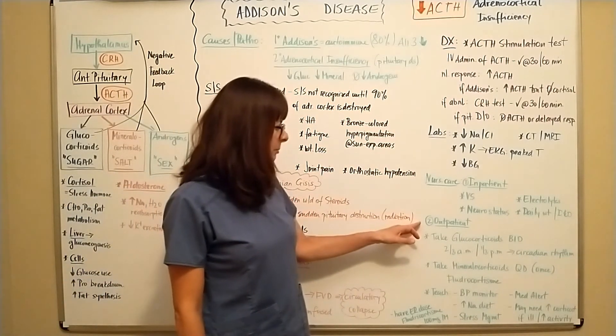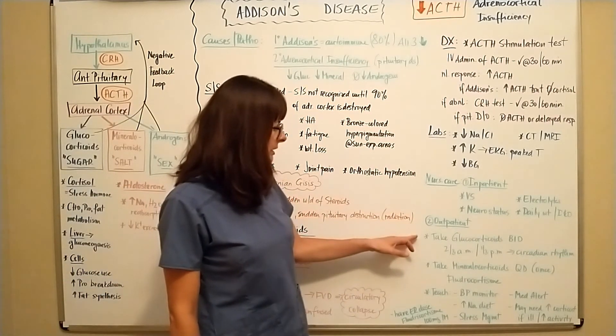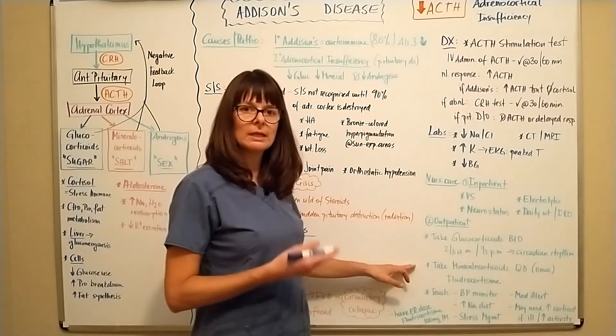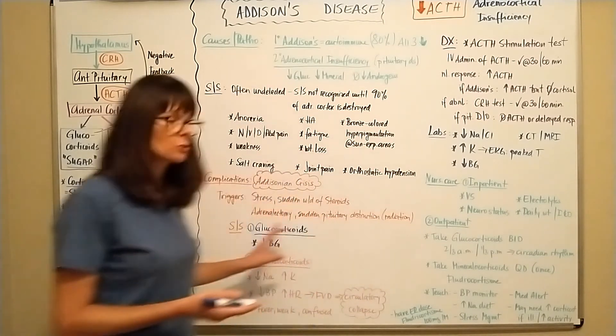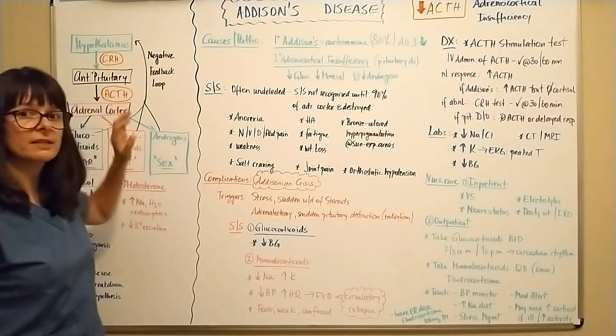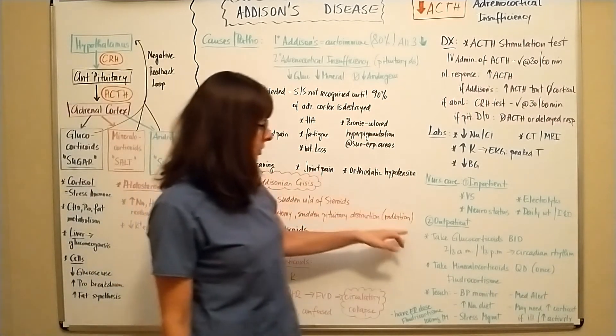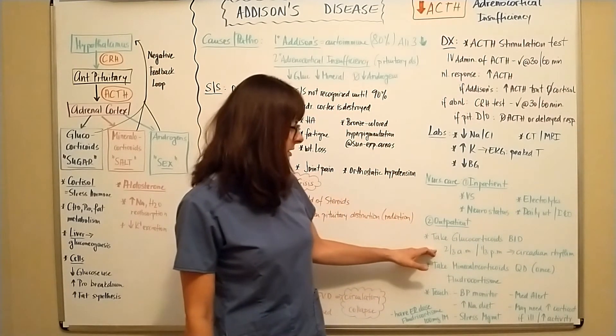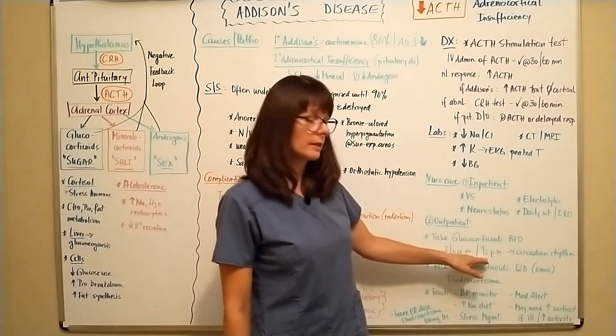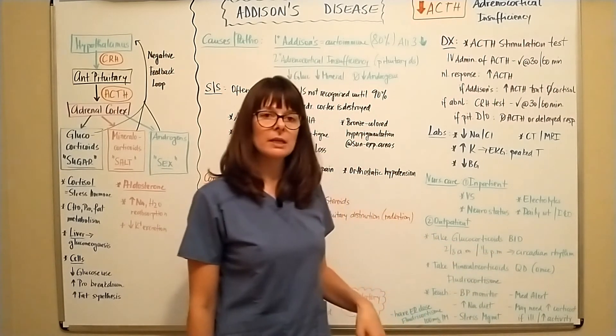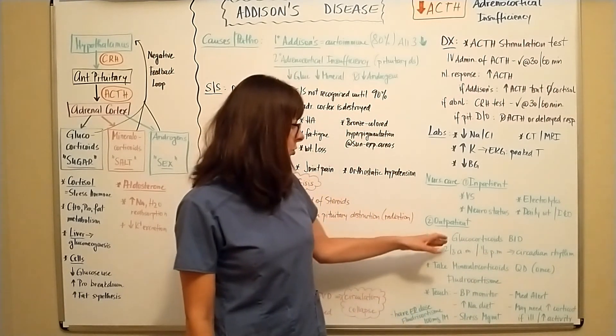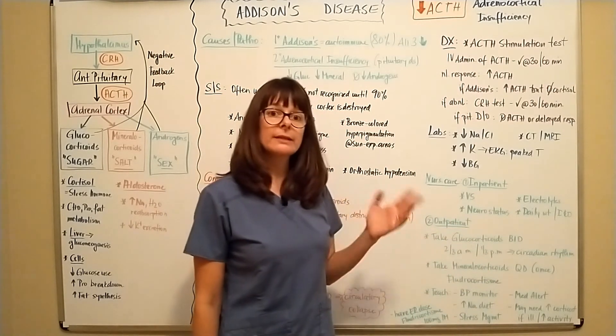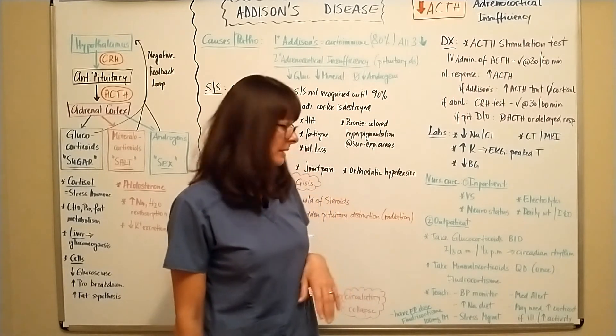If the patient is treated on an outpatient basis, they will need glucocorticoids and mineralocorticoids to be administered. They basically would need these hormones to be replaced because their adrenal cortex is not working. So glucocorticoids are recommended to be taken BID twice a day with two thirds of the dose in the morning and one third in the evening to mimic the circadian rhythm. If the glucocorticoids are taken at night only or more of a dose, it can lead to sleep disturbances because the circadian rhythm gets disturbed.